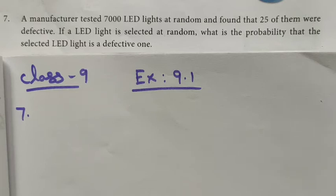Hi students, Class 9, Exercise 9.1, Question number 7. A manufacturer tested 7000 LED lights at random and found that 25 of them were defective. If a LED light is selected at random, what is the probability that the selected LED light is defective?